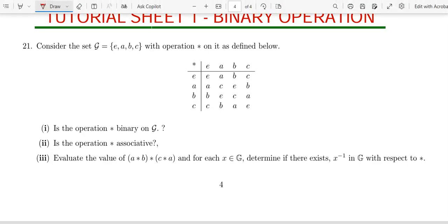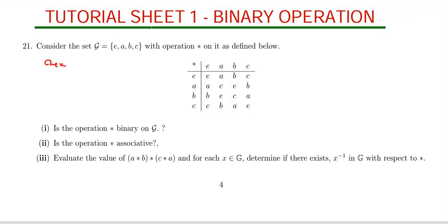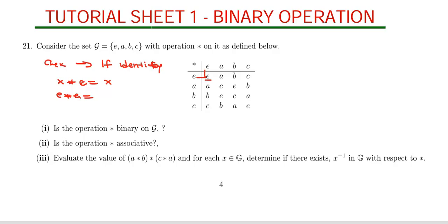To determine if star is binary on D, we are going to check if an identity exists. An identity is when we multiply any number — we say x star e should give us x. So let's start by checking: e star e. We come to the table, e star e — the point of intersection gives us e.